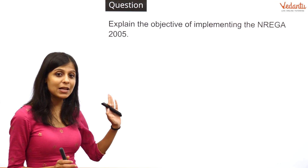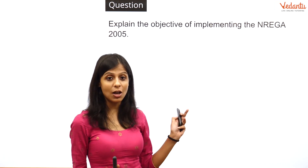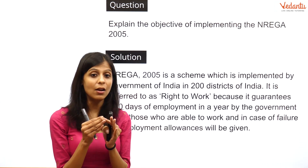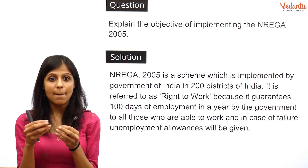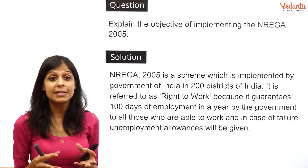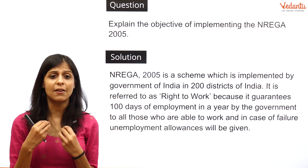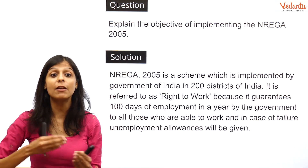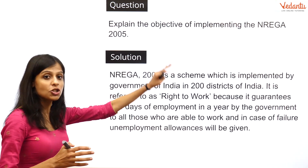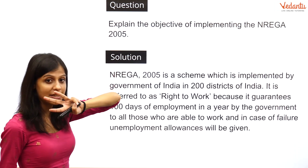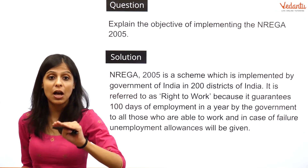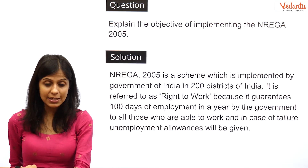The next question is: explain the objectives of implementing NREGA 2005. This scheme talks about giving the right to work to the people. The government provides 100 days of employment to unskilled labourers who are willing to work. If they are registered and not given employment within 14 days, they are provided with an unemployment allowance. This scheme was implemented by the government for 200 districts in India.